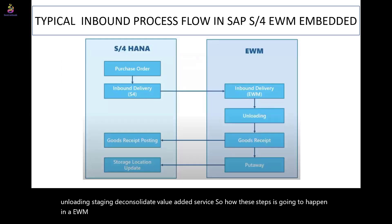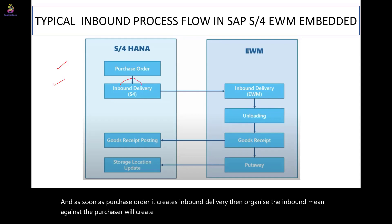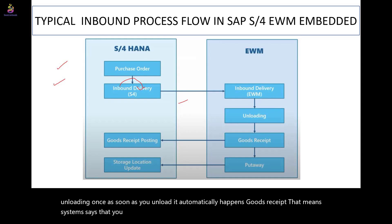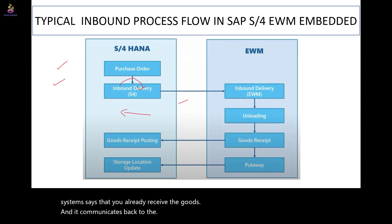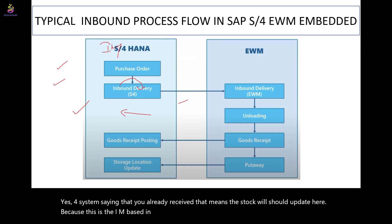As we discussed, a typical inbound process starts from the purchase order. As soon as the purchase order is created, it creates an inbound delivery, which is distributed as an inbound delivery. Once you do the unloading, it automatically triggers goods receipt — meaning the system records that you've already received the goods and communicates back to the S4 system.